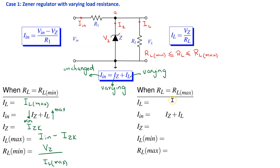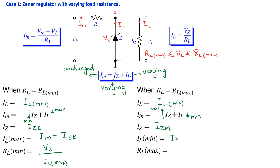To find the maximum load resistance: when RL is at its maximum, IL is at its minimum. Since IIN is unchanged, IZ must increase to its maximum value IZM. Thus IL_min = IIN − IZM, and RL_max = VZ / IL_min.